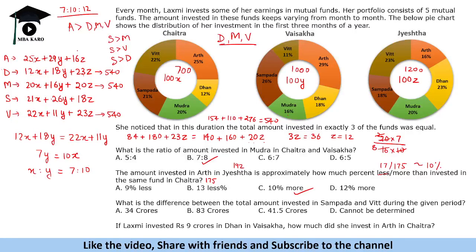Remember: if we know only the ratios, we can answer ratio and percentage questions but not questions involving absolute values. Question 3: What is the difference between the total amount invested in Sampada and Mudra during the given period? Since we don't know whether x represents 7 crores, 70 crores, or any other value — we only know the ratio 7 : 10 : 12 — the answer is: cannot be determined.